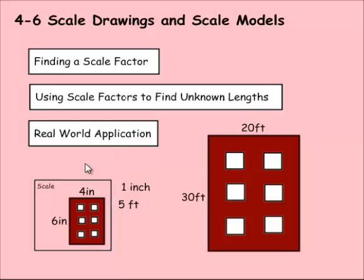20 divided by 4 is 5. Here I have 6 inches turning into 30 feet — same thing. 30 feet to 6 inches would be a 5 to 1 ratio. So our scale factor here would be 1 inch to 5 feet.